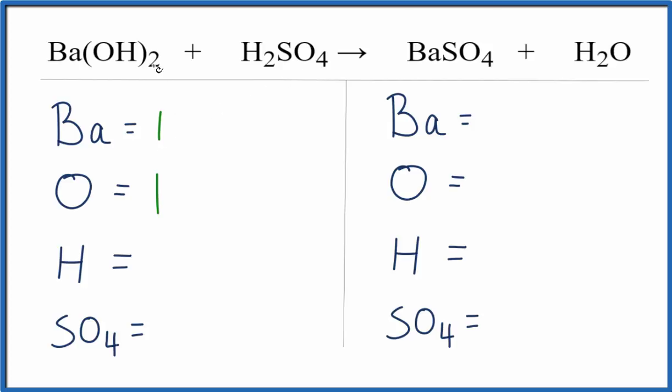And because I have a two here, it's the one times the two, so I actually have two oxygen atoms. And then hydrogen, one hydrogen there, times this two here. This two applies to everything in the parentheses, times the two. That gives me two plus I need to add these two right here to it. So actually I have a total of four hydrogen atoms.